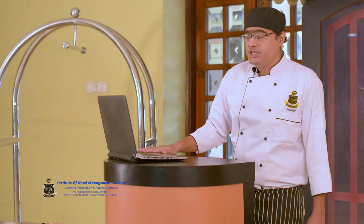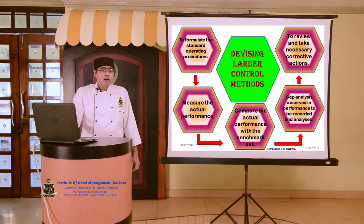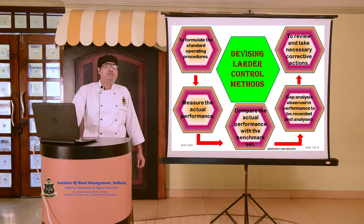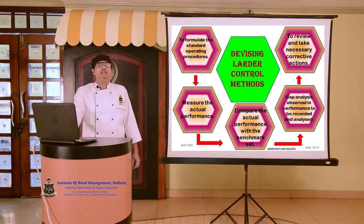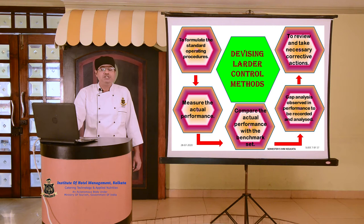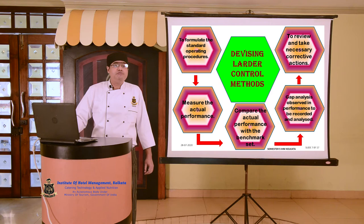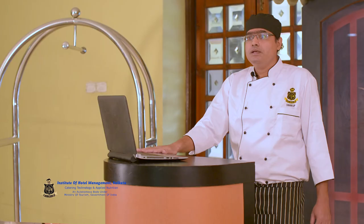We have been talking about the essentials and importance of larder control. A question now triggers: how to get this entire control process into action? In order to understand that, we have to understand the basics of the larder control methods. Any control method consists of a few basic steps. Whenever we are initiating any kind of control method, we first have to formulate the standard operating procedures. The SOP sets the benchmark, sets the boundaries, and sets the parameters within which the functioning of each and every task should be carried on.